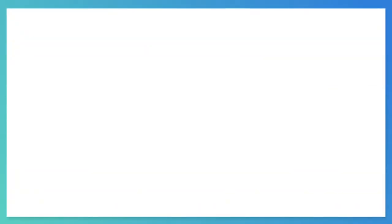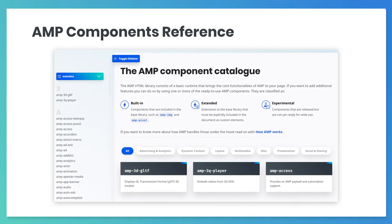Another way to find Amp components that meet our needs is to use the Amp components reference page. This page contains a big list of components supported by Amp. The entry for each component includes the name of the component and a short description about its function. We can access a component's documentation by clicking on its name. Learning more about each component, we'll know whether it will fulfill our needs or whether we need to look for a different component.